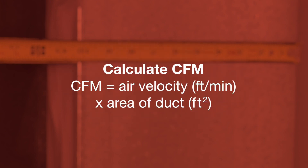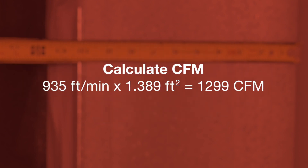Now you can calculate CFM. Take the average calculated velocity and multiply it by the area of the duct in square feet. Using our example of 935 feet per minute and our duct area of 1.389 square feet, multiply these together and the final calculated airflow is 1,299 cubic feet per minute.